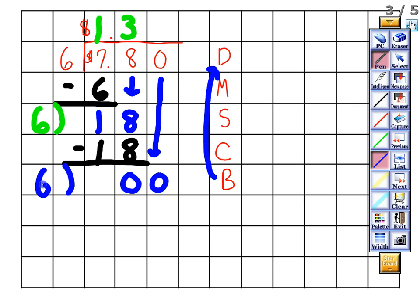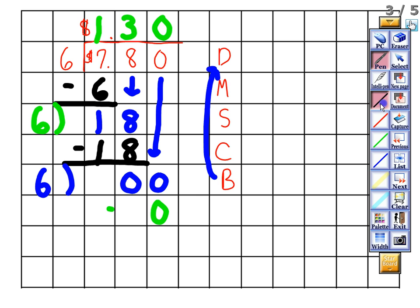Six into zero, or zero divided by six, gives me zero. We write that in our quotient, then multiply: six times zero gives zero. We subtract: zero minus zero gives zero. Whenever you're dealing with money it is important that you do not have a remainder at all. So $7.80 divided by six gives me $1.30.